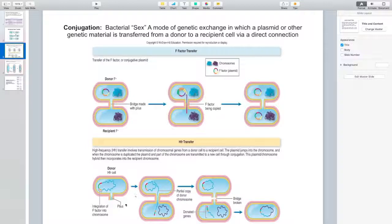Sometimes bacteria transfer these HFR, which are referred to as high-frequency transfer, involves the transmission of chromosomal genes from a donor cell to a recipient. Now, in this case, there is no plasmid involved, if you notice. The plasmid jumps into the chromosome, and when the chromosome is duplicated,